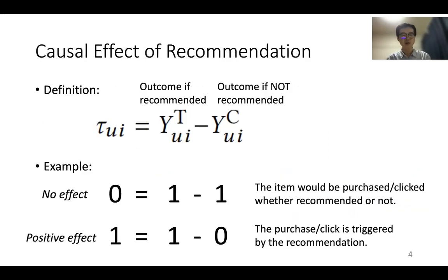The causal effect of recommendation is defined as the difference between outcome if recommended and outcome if not recommended. For example, if the item would be purchased whether recommended or not, then tau_UI becomes zero and there's no causal effect. If the purchase is triggered by the recommendation, tau_UI becomes one and there's a positive causal effect.